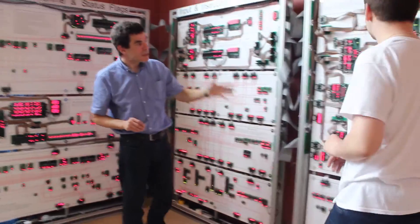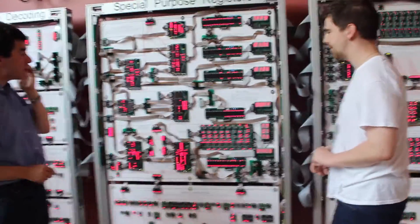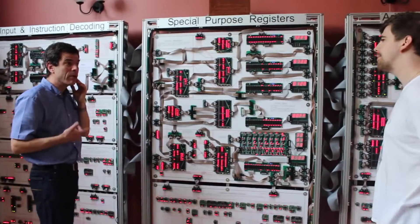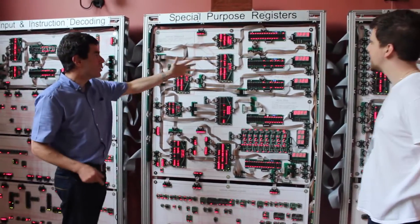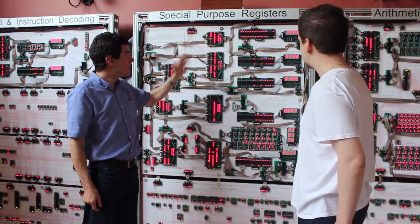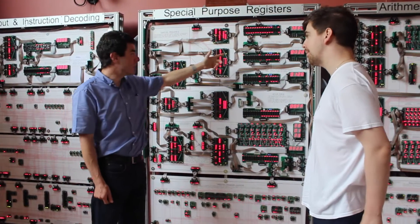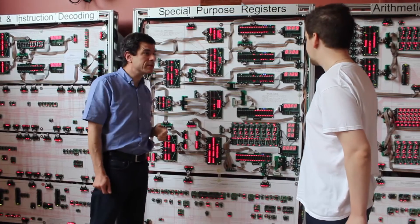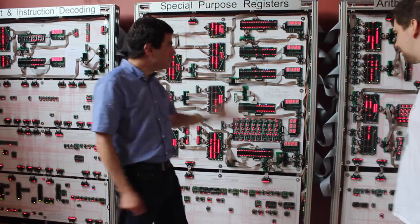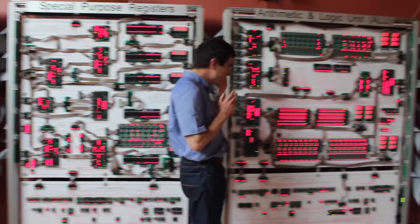Coming down here, there's special purpose registers - things like the program counter which keeps track of where you are in the program. Then some registers for talking to the outside world, looking at the address, and if you're writing data, what that's going to be.